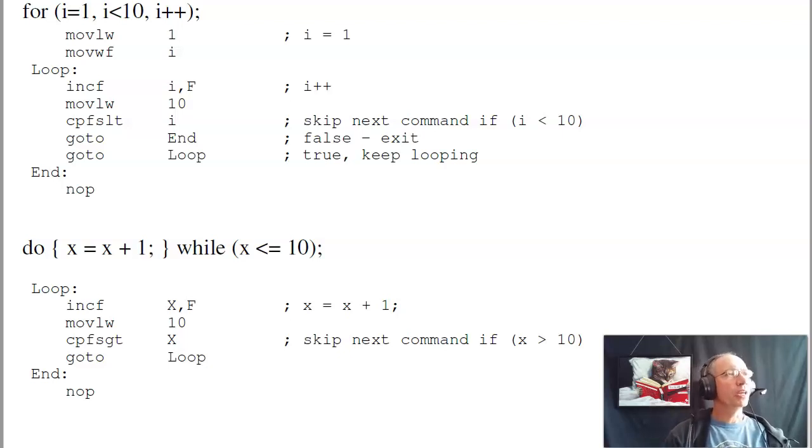I can do for i equals 1, i less than 10, i plus plus. In assembly, I first say set i equal to 1. I will then increment i, check is result less than 10. If it's not less than 10, I skip out. Otherwise, keep repeating. As opposed to a do loop. I'll keep on incrementing x by 1 as long as it's less than 10. So I'm going to say increment x, put the result in x. I'll check is x less than 10. If it is less than 10, go back to loop. Otherwise, skip out, and I'm done.